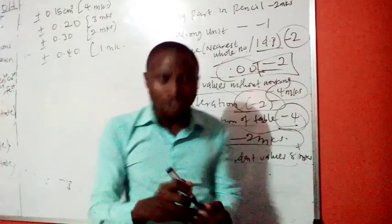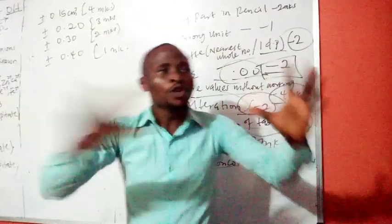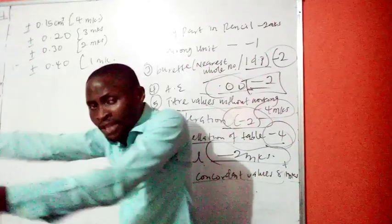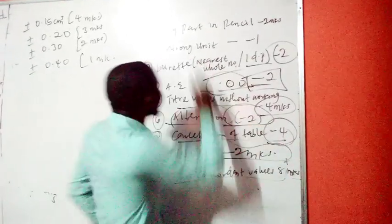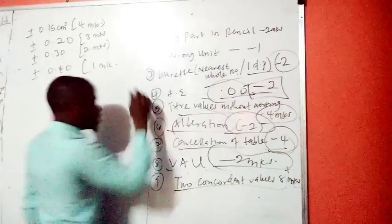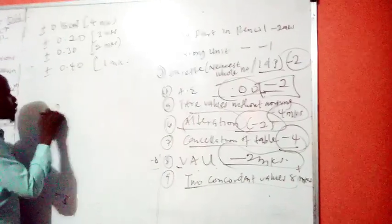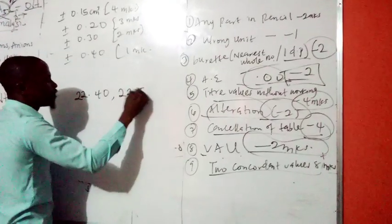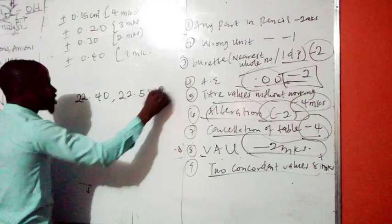Then, two concordant values. You know when you have in your table, you have first titer, you have rough, in any case, first titer, second titer, third titer. Ladies and gentlemen, if your first titer is 22.40, and your second titer is 22.50, and your third titer is 22.60.